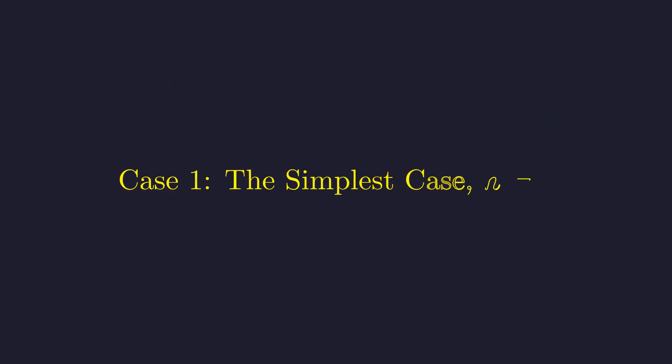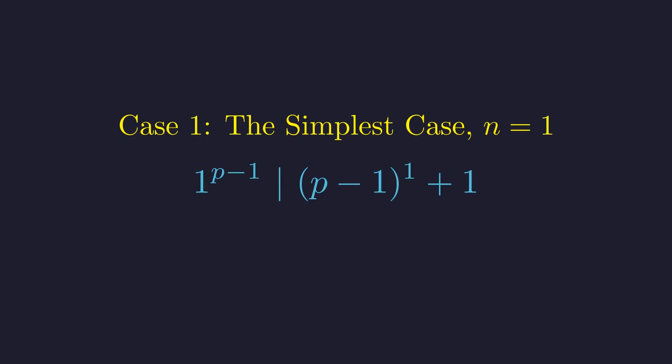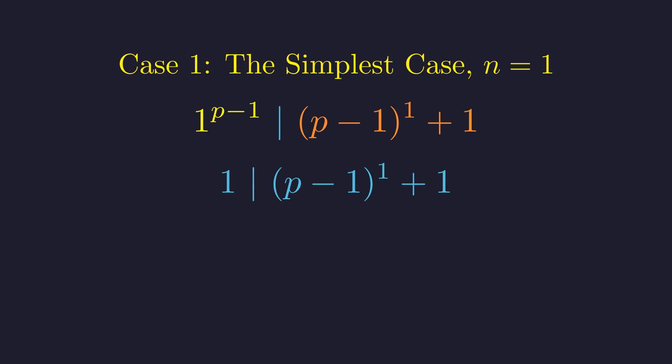A standard approach in number theory is to first test the simplest cases. We will begin with n equals 1. The condition becomes 1^(p-1) must divide (p-1) + 1. The left side, 1 to any positive integer power, is simply 1.